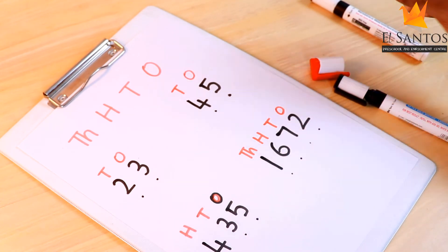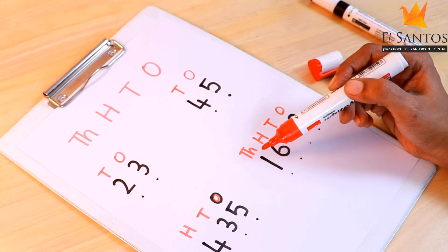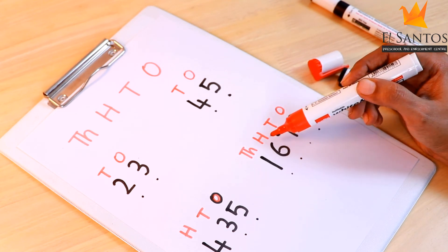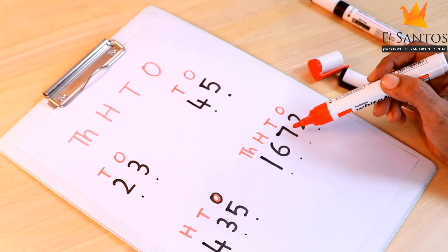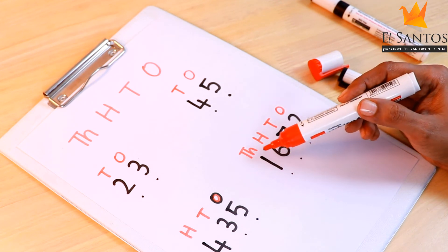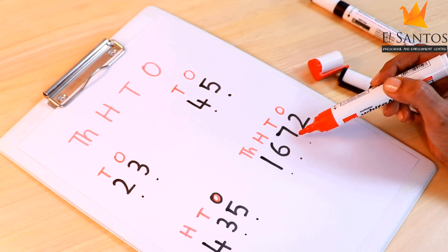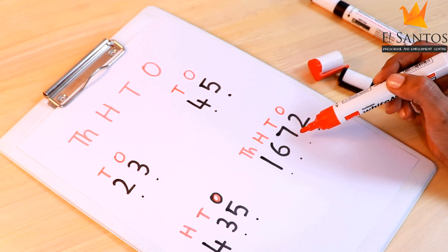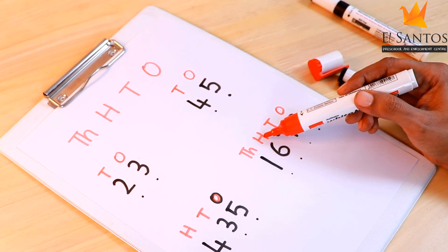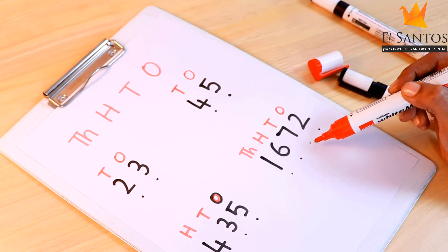Now let's read the number. One is sitting in the thousands place, so it is one thousand. Six is sitting in the hundreds place — six hundred. Seven tens are seventy. Two ones. So the number is one thousand, six hundred and seventy-two.